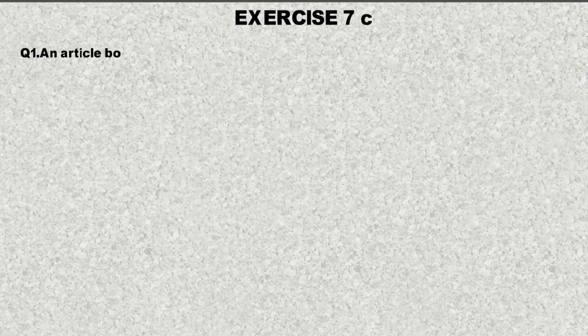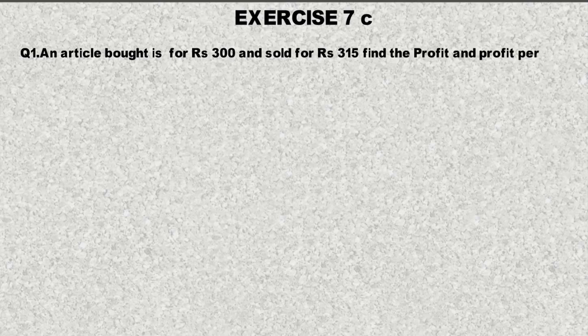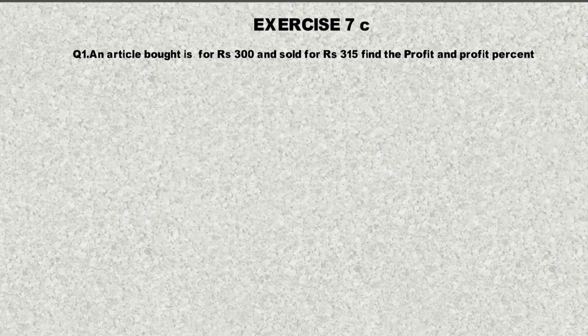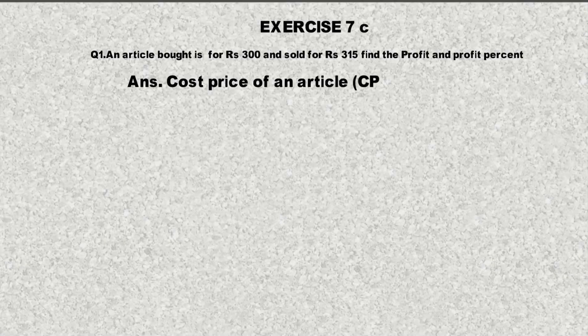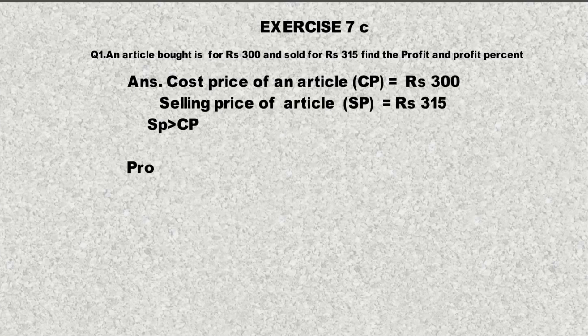Exercise 7C, Question number 1. An article is bought for 300 and sold for 315. Find the profit and profit percentage. This article is bought for 300 rupees and sold for 315 rupees. We need to find the profit and profit percentage. So first, let's make a statement. Cost price of an article is equal to 300, and selling price of an article is equal to 315.